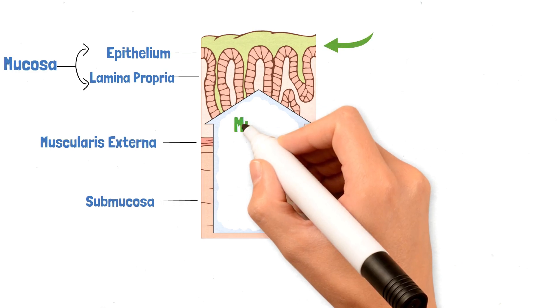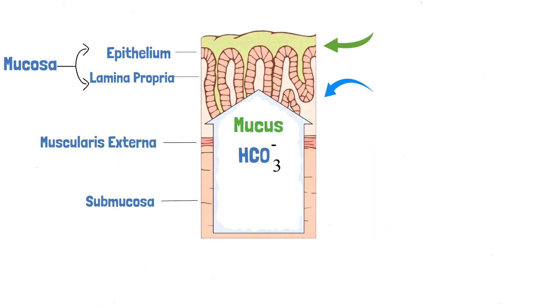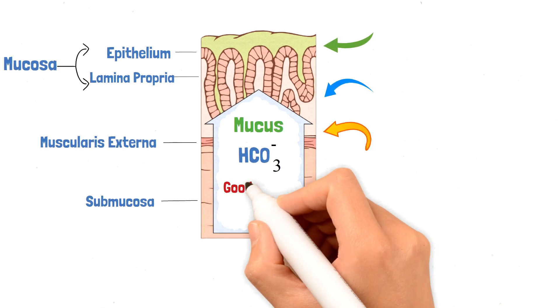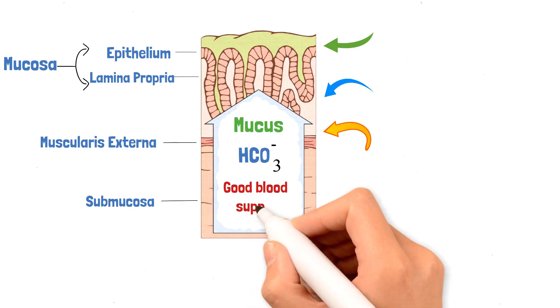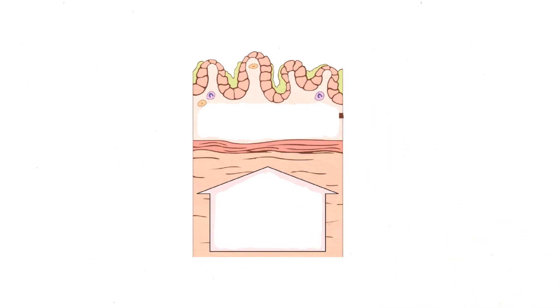There are multiple mechanisms that have evolved to protect the gastric mucosa. There is a layer of mucus that prevents large food particles from directly touching the epithelium — this mucus layer is basically an unstirred layer of fluid over the epithelium. Apart from the mucus, there is also secretion of bicarbonate ions by surface epithelial cells. Finally, there is a rich blood supply to the gastric mucosa which efficiently buffers and removes protons.